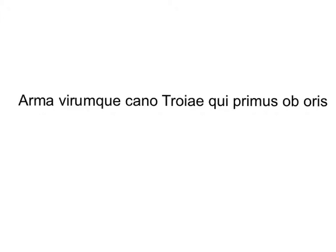Step number one is to look for elisions. Elisions happen over two words — when one word ends in a vowel, or a vowel plus M, and then the next word starts with a vowel, or an H followed by a vowel. I'm going to go through my line and look at the end of every word and see if it's a vowel.